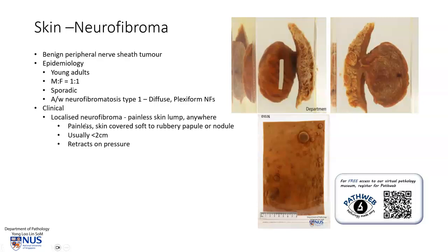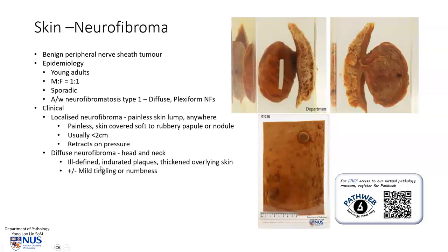Clinically, we have several different presentations. The localized neurofibroma is a painless skin lump that can occur anywhere, and usually it can feel soft or sometimes rubbery. Here is one example, and this is another example where it is a little bit flatter. It's usually relatively small, and it retracts on pressure.